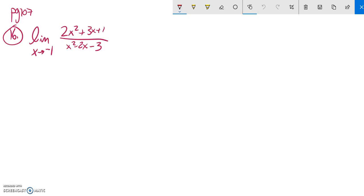And if I just try and plug it in right now, if you notice, if I plug it into the denominator, negative 1 squared minus 2 times negative 1 minus 3, I get 1 plus 2 minus 3, I get 0 in the denominator.